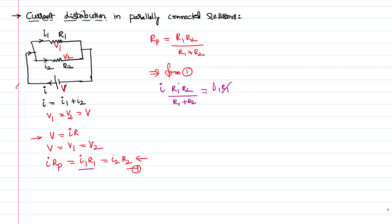R1 on both sides gets cancelled. This implies that I1, the current across the first resistor, is equal to I·R2 divided by R1 plus R2.